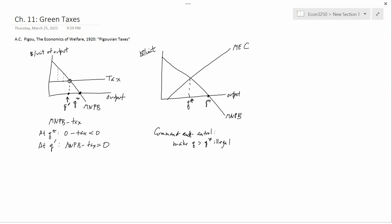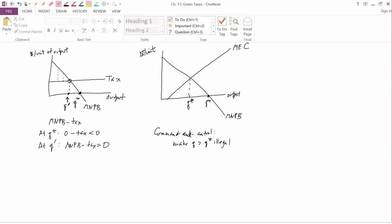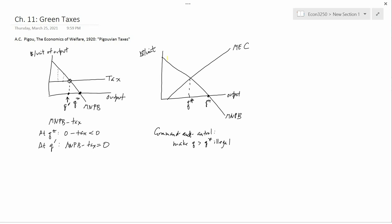To answer this question, we don't need to look at MEC. All we need to do is look at the MNPB curve. What the diagram on the left taught us is that if you have an MNPB curve and you want to find out how the firm responds to a tax, you draw in the tax, and then where the tax line intersects the MNPB curve is where the firm is going to want to go.